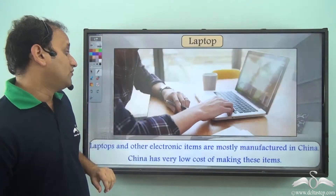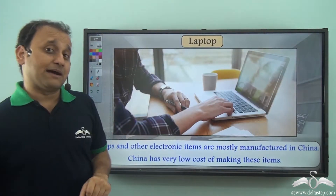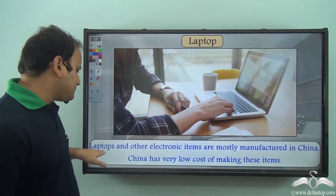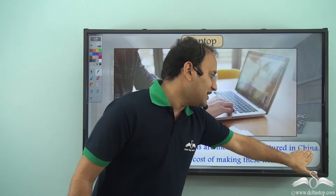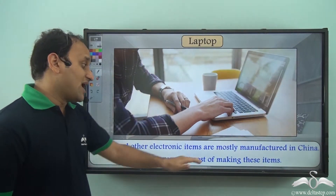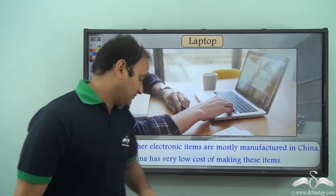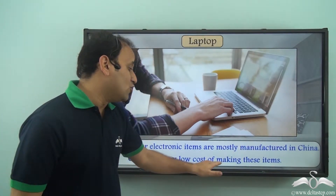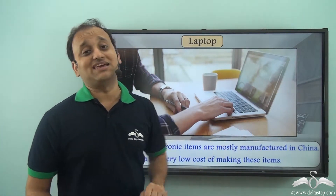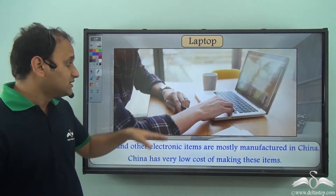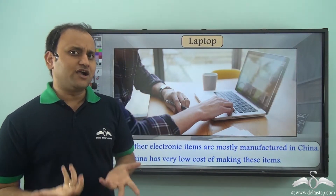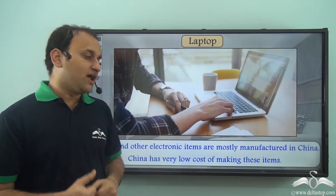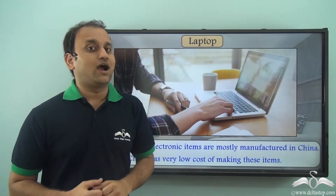Now what about the laptop? Well, laptops and other electronic items are mostly manufactured in China. So why is it mostly manufactured in China? Because China has very low cost of making these items. As a result, most of the electronic items come from China, so we are dependent on China for all these electronic items.